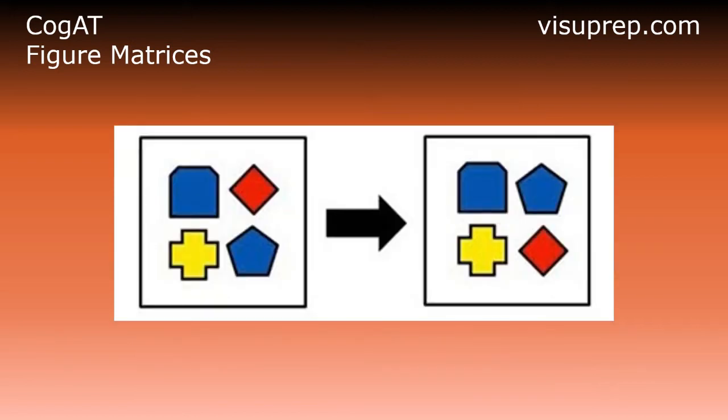Looking at the pictures on the top row, we can see that the shapes in the first column of both boxes are the same.